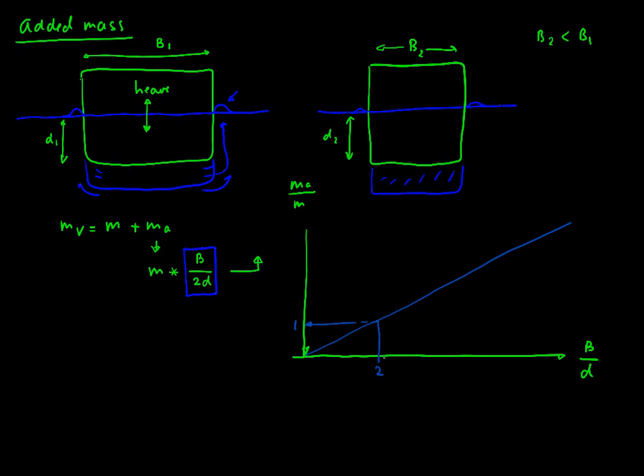So going on that if we have a 4, this would give us a 2 over there. So the added mass is a function of the beam to draught ratio. That's a thing to remember.